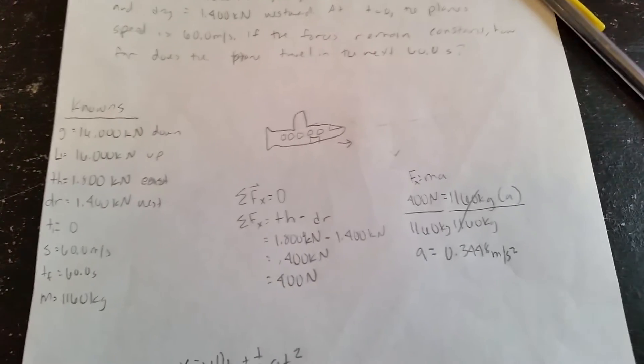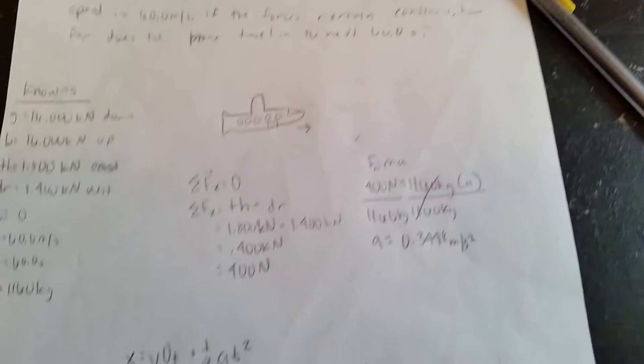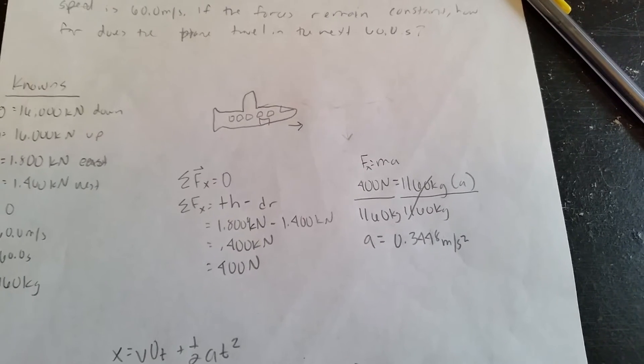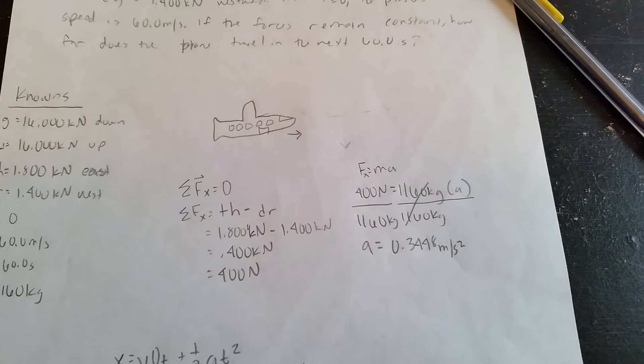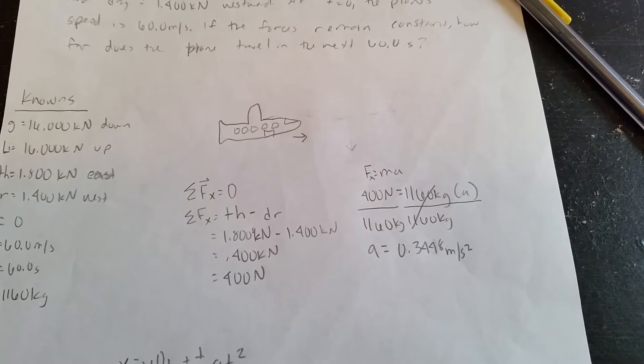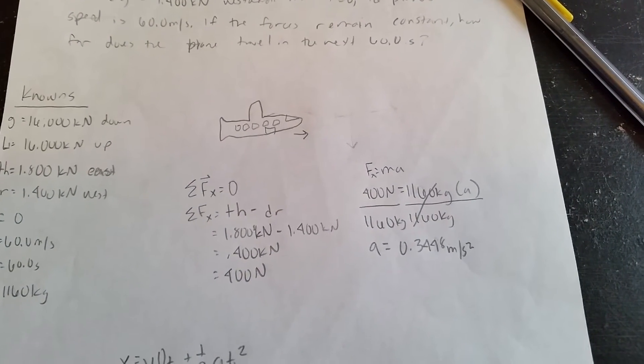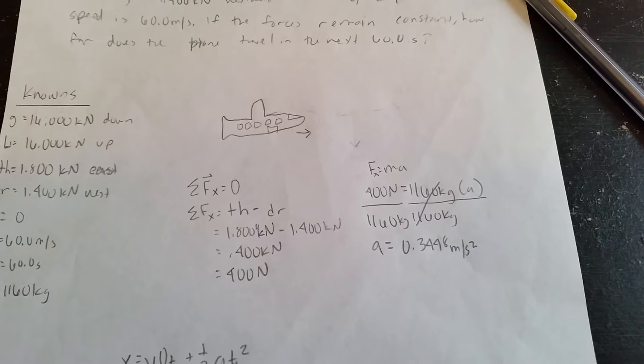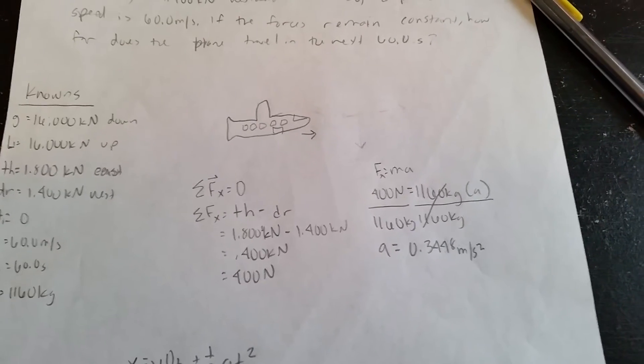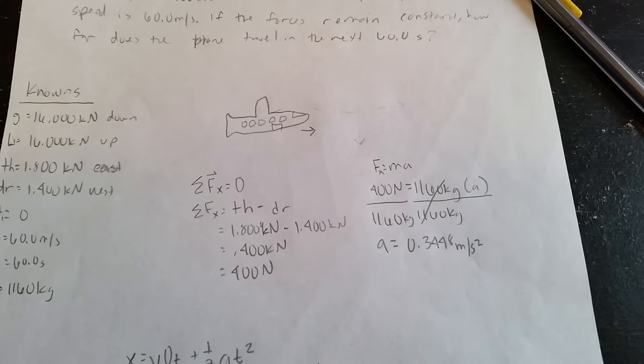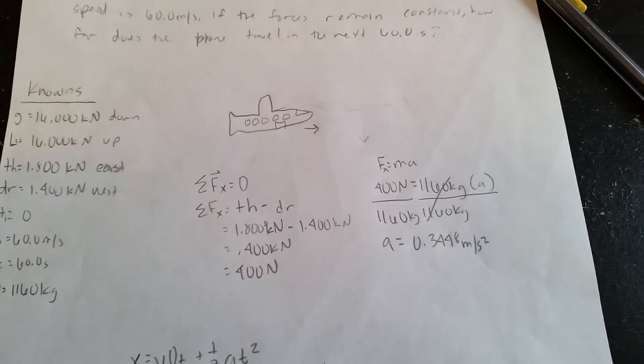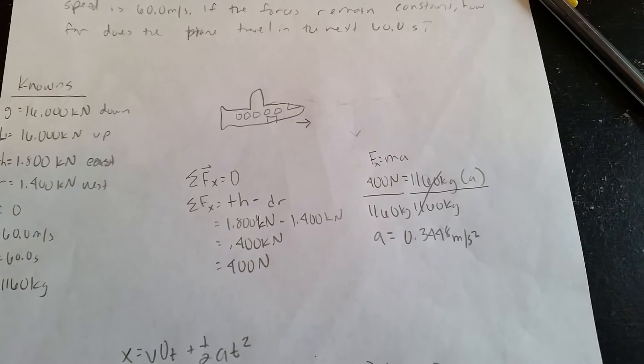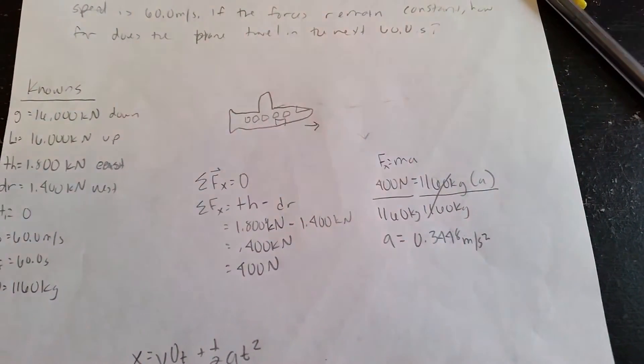So the next thing I'm doing here is I'm using Newton's second law to find the acceleration. So I get my formula, F_x in the x direction is equal to m times a, which is 400 newtons equals 1,160 kilograms times a. So then to get my acceleration, I divide both sides by 1,160 kilograms, which gives me my acceleration of 0.3448 meters per second squared.